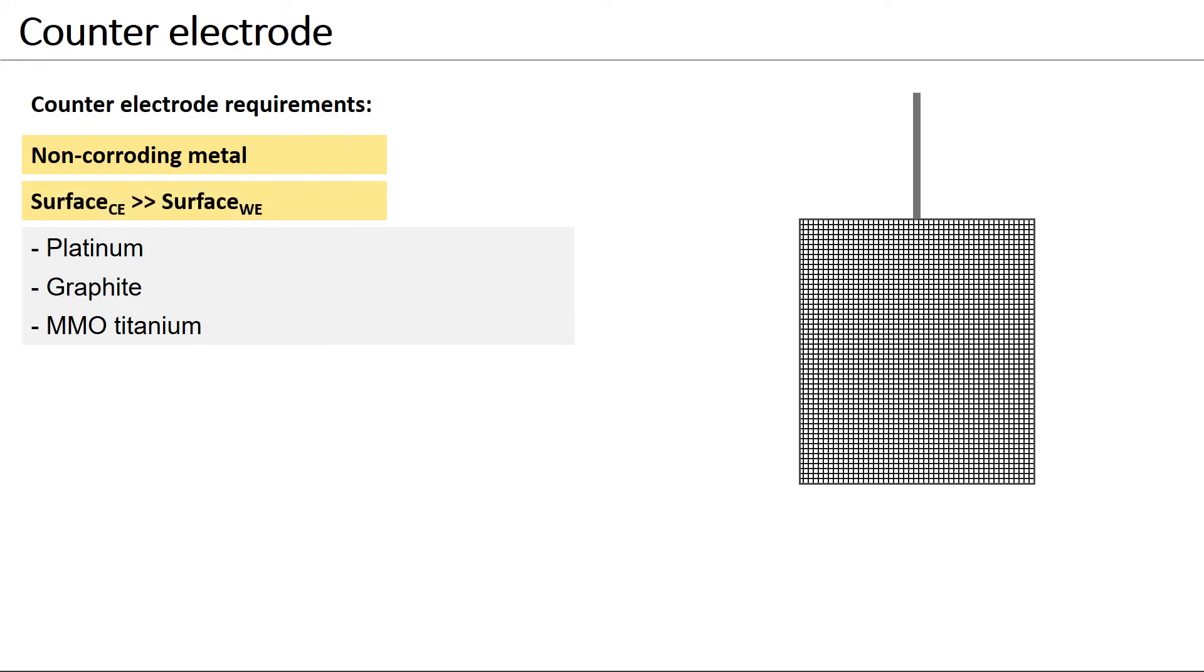It's recommended to ensure that the surface of the counter-electrode is larger than the working electrode, to avoid that a possible kinetic hindrance of the reaction at the counter-electrode limits the system. To achieve a large surface area, counter-electrodes are sometimes in the form of a mesh.